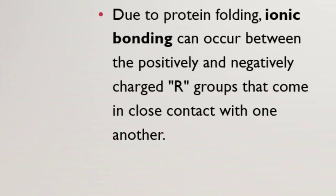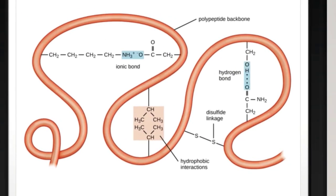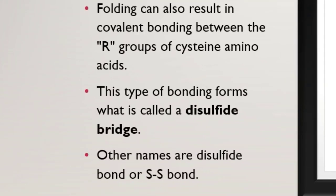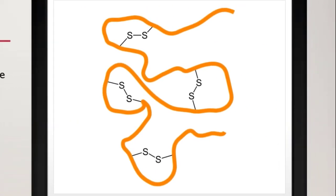Next, we have ionic bonding. Proteins contain many amino acids that can form ionic bonds. We also have disulfide bridges. When we have sulfur-containing amino acids in a protein, we get another type of force called the disulfide bridge. The disulfide bridge is a covalent linkage between two sulfur atoms of two cysteine amino acids. It is also called a disulfide bond or S-S bond, meaning a sulfur-sulfur bond.